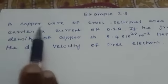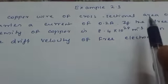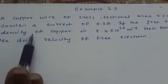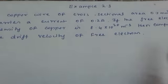Example 2.3. A copper wire of cross-sectional area 0.5 mm² carries a current of 0.2 ampere.